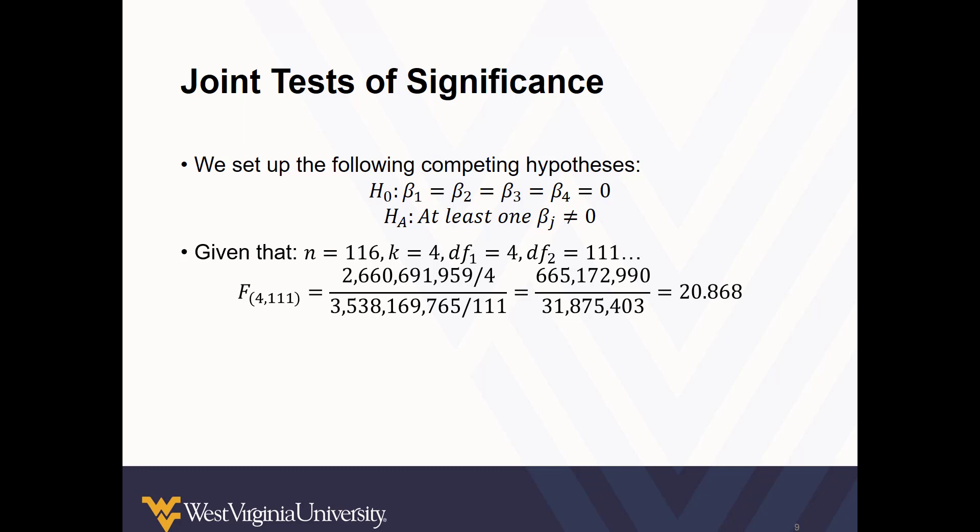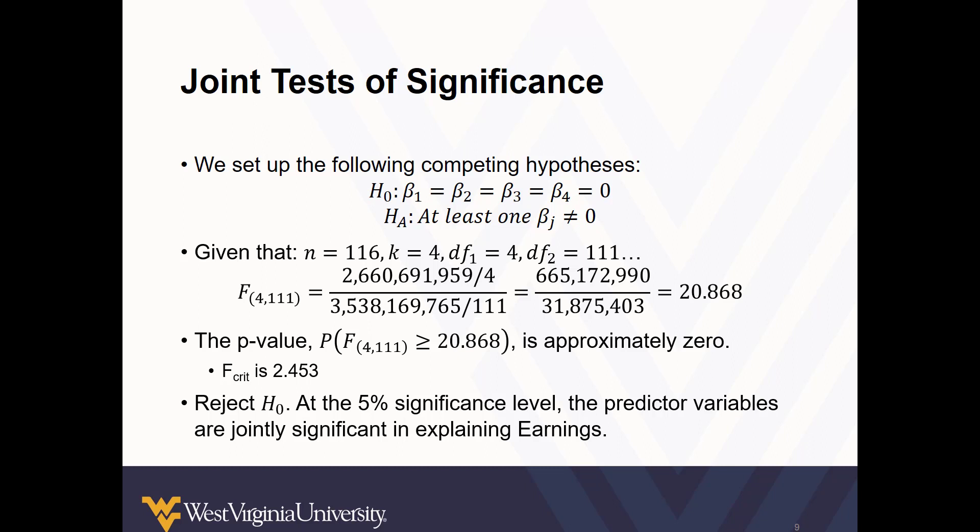And we can refer to an f-table to find the critical f-statistic for the matching degrees of freedom to compare our calculated statistic. If our calculated value is larger than the critical value, success! We can reject the null. But it is possible to find joint significance without each one of the variables in the model being significant. And here we can reject the null hypothesis at the 5% significance level. The predictor variables are jointly significant in explaining our earnings.